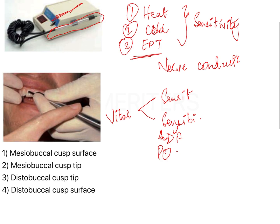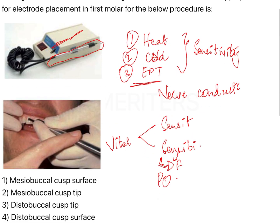Coming to the question: for maxillary anterior teeth, the electrode is placed on the middle third of the tooth. For posterior teeth, the mesial surface is more accessible than the distal surface, so placement is on the mesial surface. Based on this, options three and four — which relate to the distal surface — are eliminated.